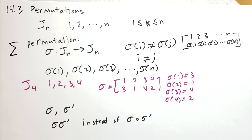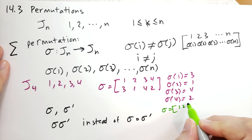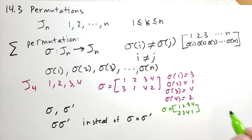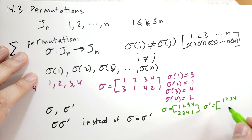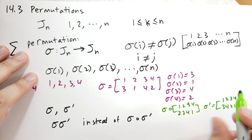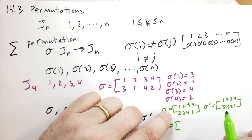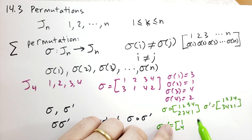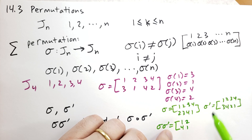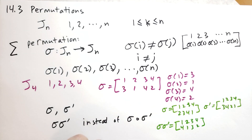As an example, we have sigma = [1, 2, 3, 4] → [2, 3, 4, ?] and sigma prime = [1, 2, 3, 4] → [3, 4, 2, 1]. To compute sigma sigma-prime, we apply sigma prime first: 1 goes to 3, then 3 goes to 4, so 1 goes to 4. Then 2 goes to 4, 4 goes to 1, so 2 goes to 1. Then 3 goes to 2, 2 goes to 3, so 3 goes to 3. Then 4 goes to 1, 1 goes to 2 — that's sigma sigma-prime.